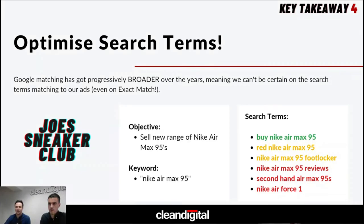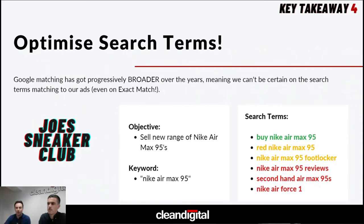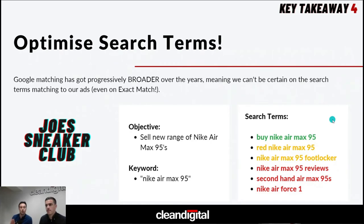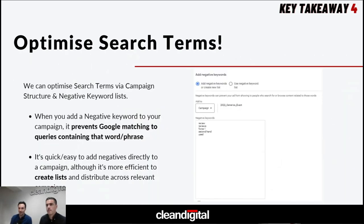After launching the campaign we quickly look at the search term report and see a broad range of terms. 'Buy Nike Air Max 95' — absolutely, we want that traffic. But then things start going broader: color terms like 'red' — do we stock that color? If not, we don't want to appear on it. 'Footlocker' is a competitor — sometimes we want that, sometimes not. 'Reviews' is potentially not someone in the buy-now phase. 'Secondhand' — we don't sell secondhand. And 'Nike Air Force One' is not a product we want to sell in this campaign.